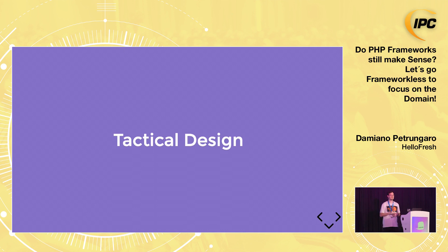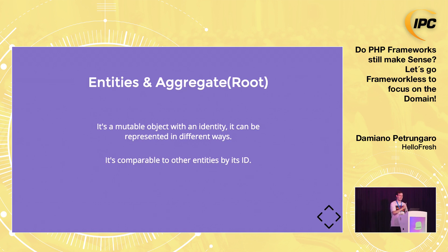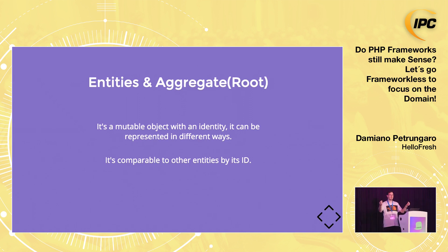When strategic design has explained all the rules, now we have to apply them as code. The most important things in tactical patterns are entities. An entity is just a mutable object that owns an ID. So if you have two customers and those two customers have the same ID, they are the same thing — they represent the same thing.